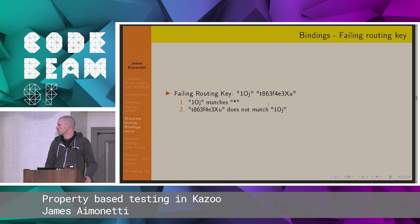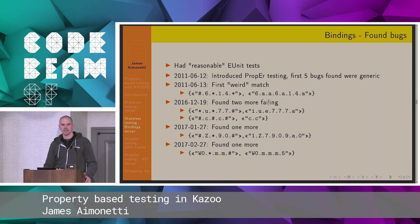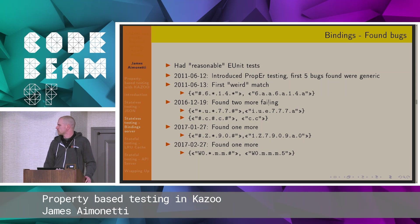We started running this and introduced it in 2011. It found a bunch of low-hanging fruit right off the bat, and then we didn't have anything for about five years. This was part of our CI pipeline, so it was getting run on every pull request, every merge to master, 500 times a pop, because we didn't want to overwhelm CircleCI. And then, five years later, we got a couple pops — some new test cases.